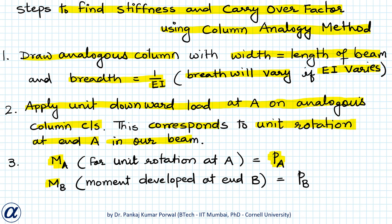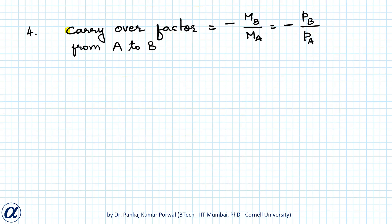The moment MB developed at end B of our beam equals the pressure PB developed under the analogous column at edge B. The carry over factor from A to B equals minus MB upon MA, which equals minus PB upon PA.